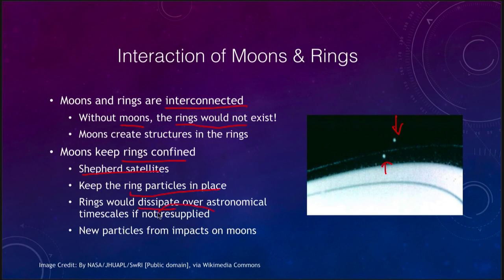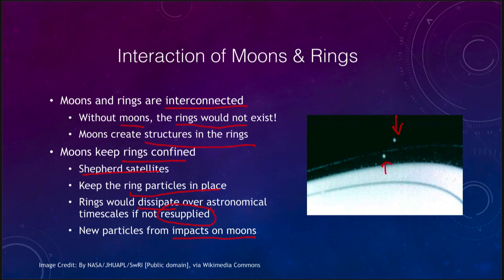The rings would dissipate over astronomical time scales — if we run models of all these particles orbiting, we find they would slowly dissipate out into space. There has to be some form of resupply, and that would come from the moons. Impacts on the moons could throw more material back in and replenish the ring particles.